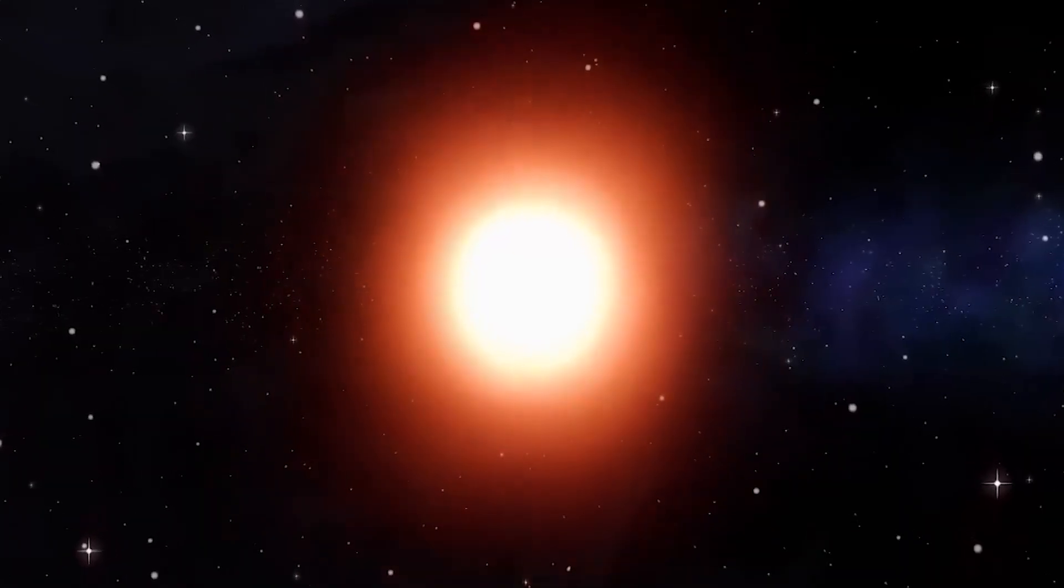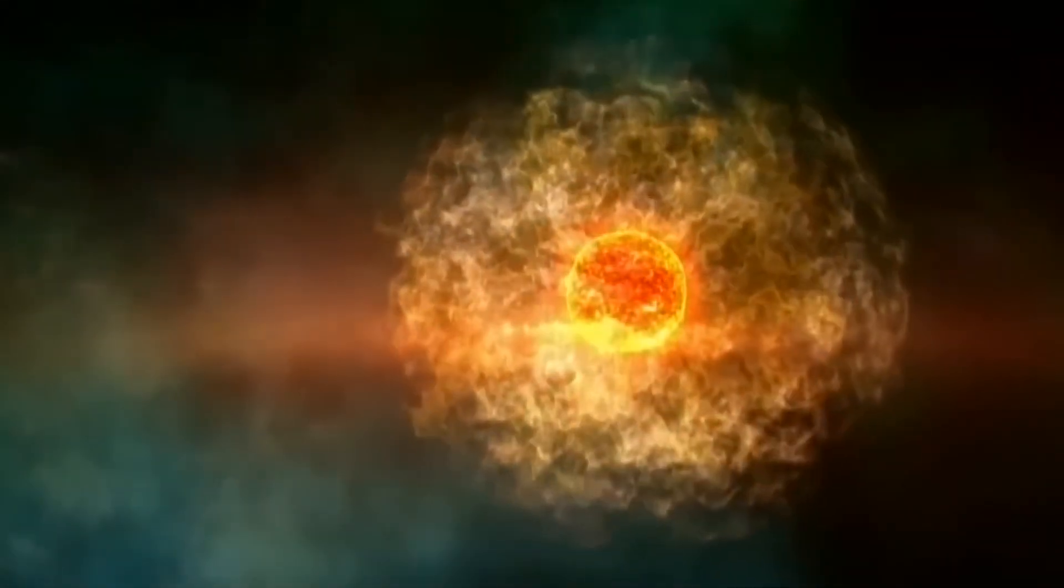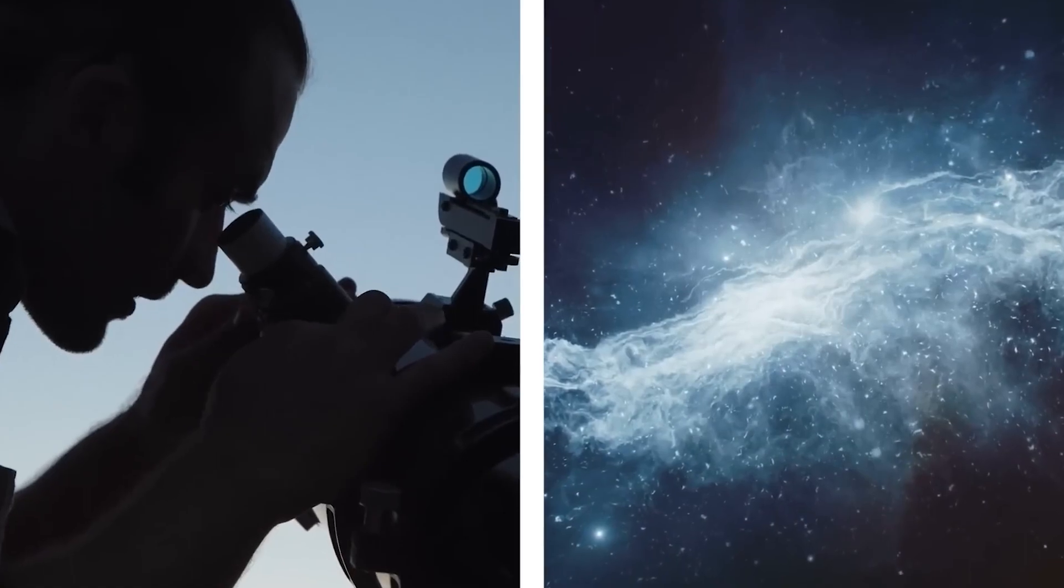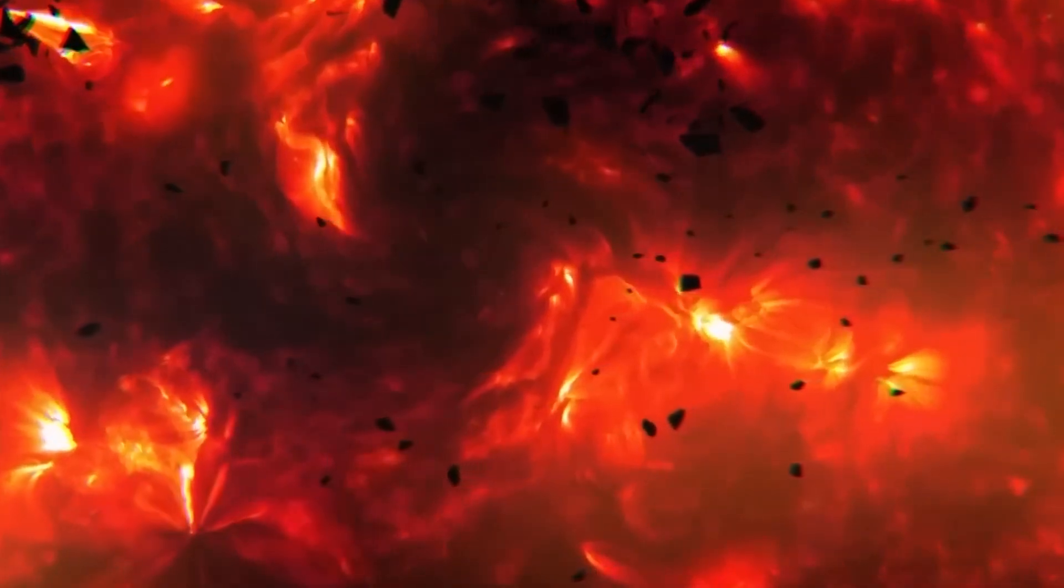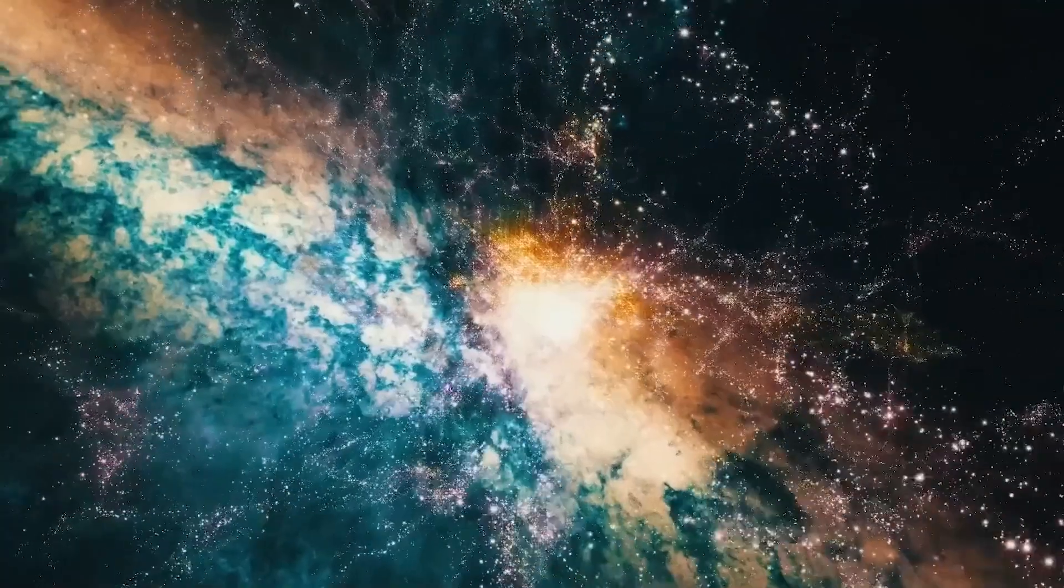Suppose Betelgeuse were located within the hazardous 50 light-year range. In that case, the consequences would be dire. The intense gamma radiation could strip away Earth's protective ozone layer, leaving the planet vulnerable to harmful ultraviolet radiation from the sun.